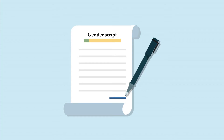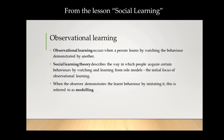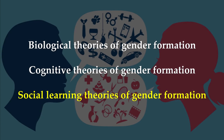However, gender schema theory doesn't take into account the social and cultural factors that influence gender role formation. One of the main forms of learning is social learning — watching and imitating role models — and seeing gender role formation through that lens is our third and final theory.